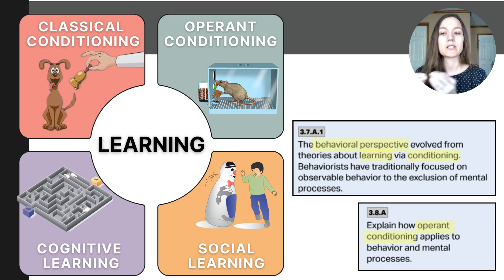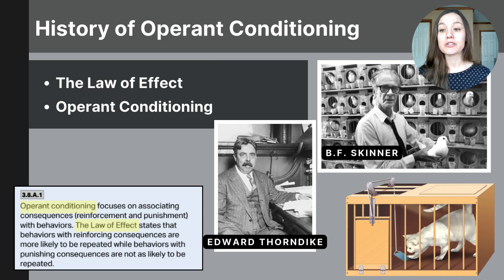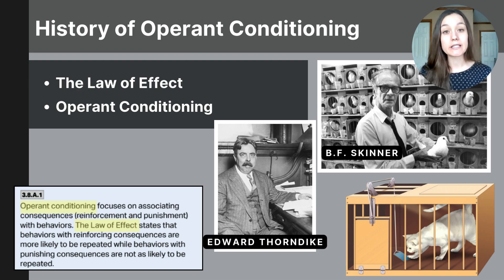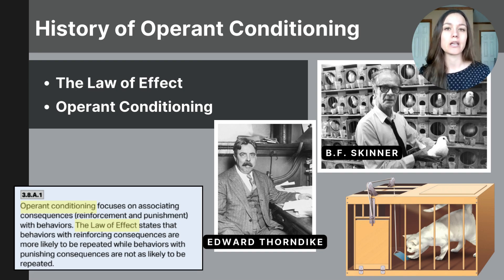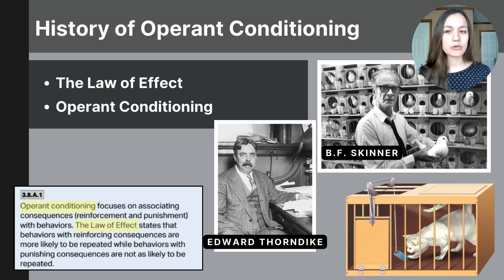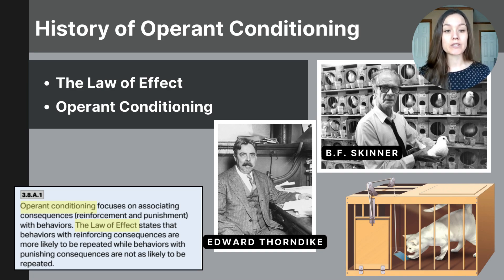Today's video lesson will focus specifically on the different types of consequences and how they influence our behaviors. B.F. Skinner is one of the most influential figures in behavioral psychology. His development of operant conditioning helped us understand how voluntary behaviors are developed and shaped. But first, it's important to trace the beginning of this research with Edward Thorndyke, a psychologist in the early 1900s who studied animal learning. He's best known for the law of effect, which says behaviors followed by rewards are more likely to happen again, while behaviors followed by negative outcomes are less likely to be repeated. Thorndyke demonstrated this with puzzle box experiments where cats learned to escape by trying different actions and repeating the ones that worked.